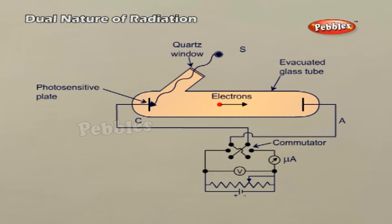The battery maintains the potential difference between the plates C and A and that can be varied. The polarity of the plates C and A can be reversed by a commutator. The emission of electrons causes flow of electric current in the circuit. The potential difference between the emitter and collector plates is measured by a voltmeter V, whereas the resulting photocurrent flowing in the circuit is measured by a microammeter.